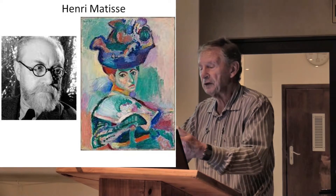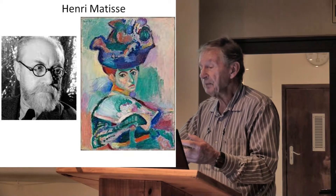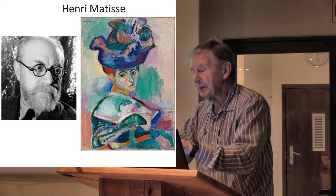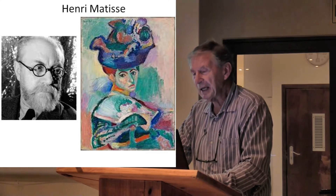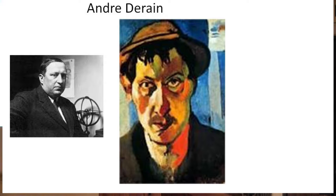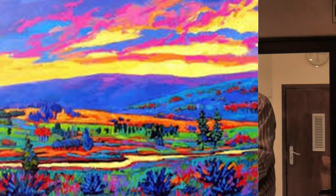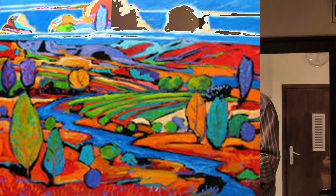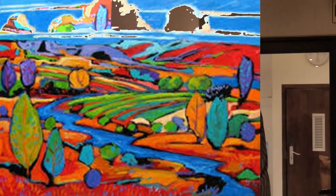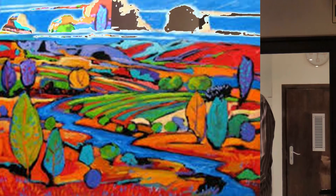Here we see Henri Matisse on the left and one of his paintings on the right — you can immediately see the brushstrokes clearly on the painting. They didn't really care; they were going against the establishment. André Derain — this is a self-portrait; he was quite stout but painted himself quite thin. You can see the colour scheme. Landscapes became an important thing — here we can see an essentially colourful landscape painting. The colours are absolutely amazing.